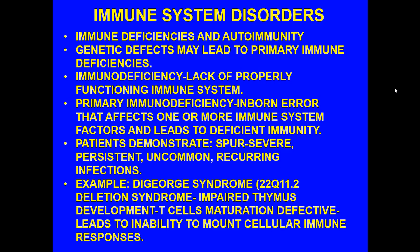When we talk about primary immunodeficiency, it is an inborn error that affects one or more immune system components. Looking at figure 13, you could have actions that affect the humoral immune system, the cellular system, combined humoral and cellular, as well as immunodeficiencies that act on certain components of the innate immune system. Patients will demonstrate what's called SPUR — severe, persistent, uncommon, and reoccurring infections. An example is DiGeorge syndrome, a deletion syndrome on chromosome 22 at marker area Q11.2, where that section is missing.